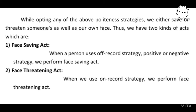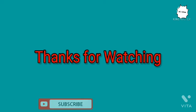It is important to note that when we opt for any of these politeness strategies, we either save or threaten someone's face or our own. This act is called either a face-saving act or a face-threatening act. Face-saving act means when you save your own and someone else's face. When we use positive politeness strategy, off-record strategy, or negative politeness strategy, we perform a face-saving act. When we use on-record strategy, we perform a face-threatening act because we say something directly and impose something on our listener.